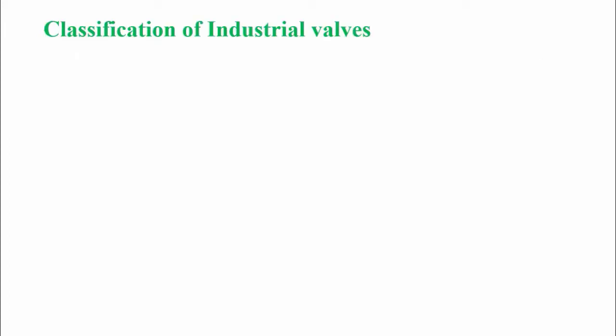Now let's see the classification of industrial valves. All industrial valves may be classified from three different points of view. The first one is valve function. Each type of valve has a different type of function — some stop fluid flow, some start it, some regulate the flow, some regulate the fluid amount, and sometimes they do other things.